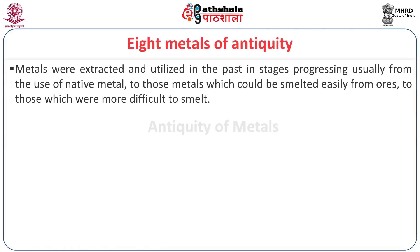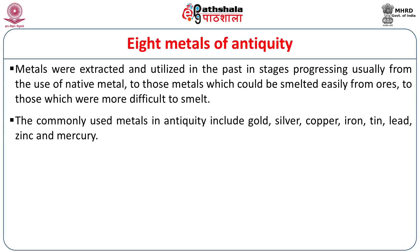Metals were extracted and utilized in the past in several stages, progressing from the use of native metal — those metals found easily in the native state — to those found in combination as ores, and then those which could be easily smelted were first identified, followed by those more difficult to extract. When we talk of smelting, we are talking about the process of the reduction of the ore to the metallic state using pyrometallurgical techniques.